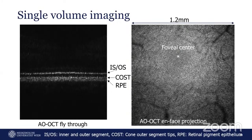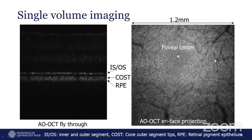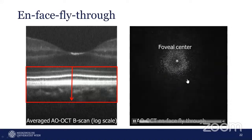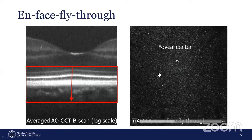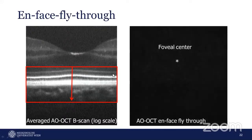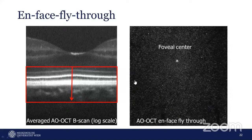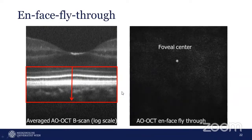In the OCT fly-through view, individual B-scans are acquired and combined into a volume image, from which an en-face projection is extracted. The fovea is at the center and the periphery surrounds it. In the cross-sectional image, zooming in shows different layers: the inner and outer segment layer, the cone outer segment tips layer, and the RPE layer. In the en-face fly-through we can see different patterns in different layers indicating different cell types — photoreceptors and RPE layers.